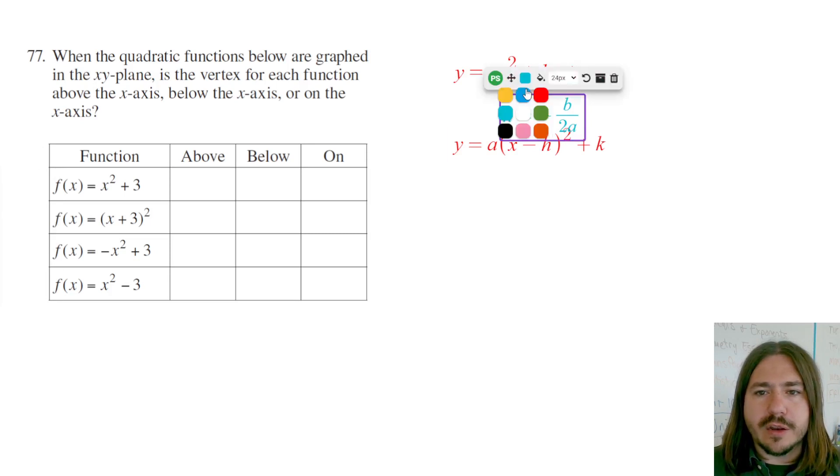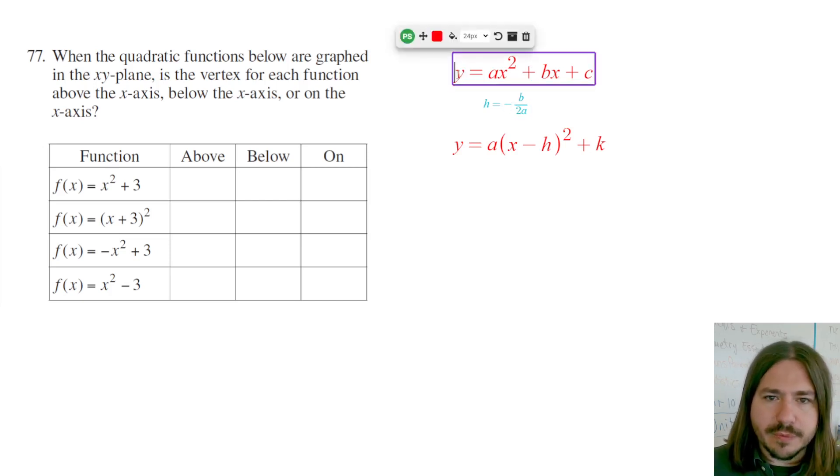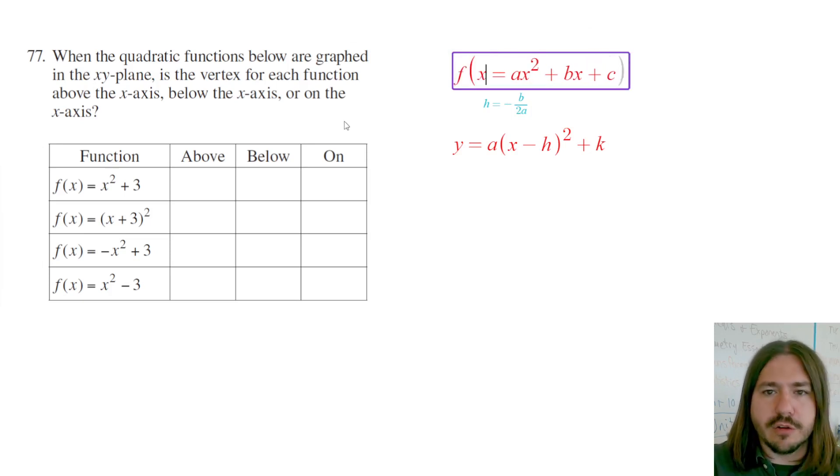And then once you get that value, to get the k value or the y-coordinate of the vertex, you're gonna plug this back into x. So let me change this to stick with the notation they're using over here. I'll write this as f of x.